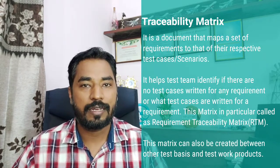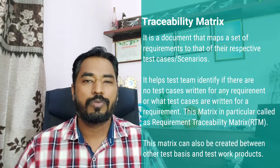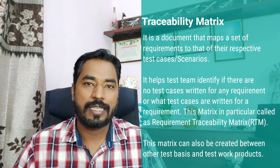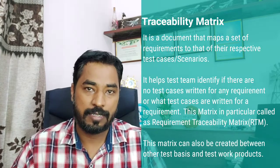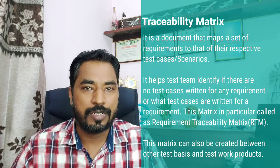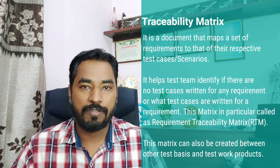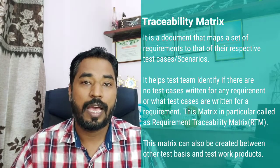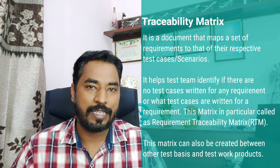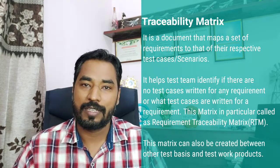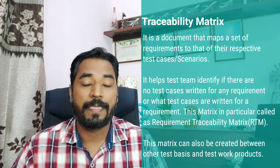The most important thing to understand is why we do this mapping — why do we need a traceability matrix? The answer is that it's very crucial for any team, or test team, to understand how many requirements have been converted into test cases at any point in time. Most importantly, you do this in the test implementation phase before getting started with execution. The reason is to make sure: have we converted all our requirements into test cases? Is there any requirement yet to be converted, or any requirement where test cases have not been written at all?